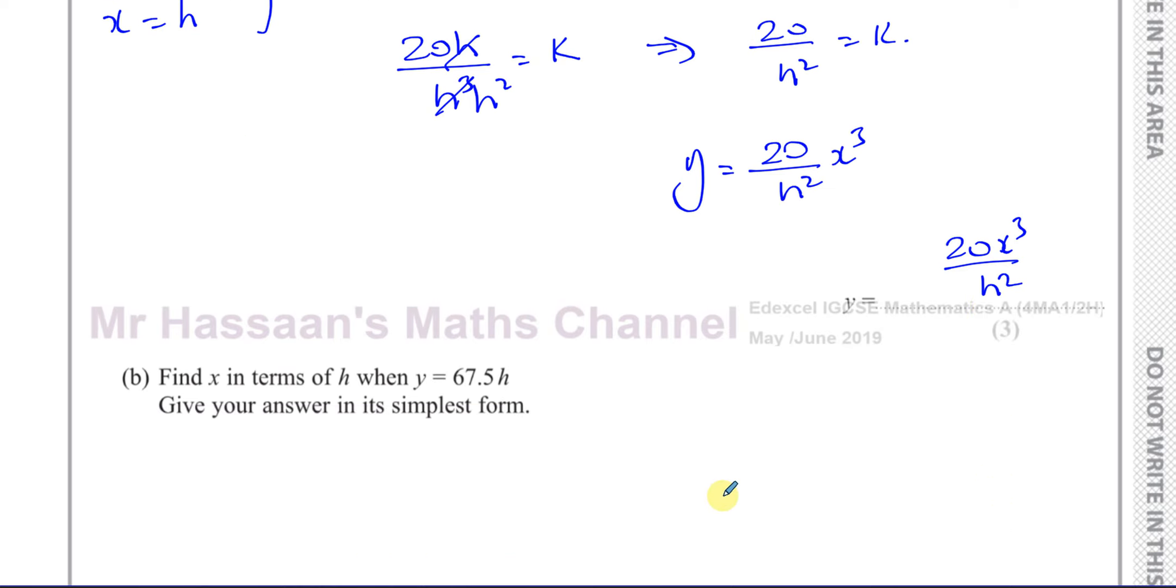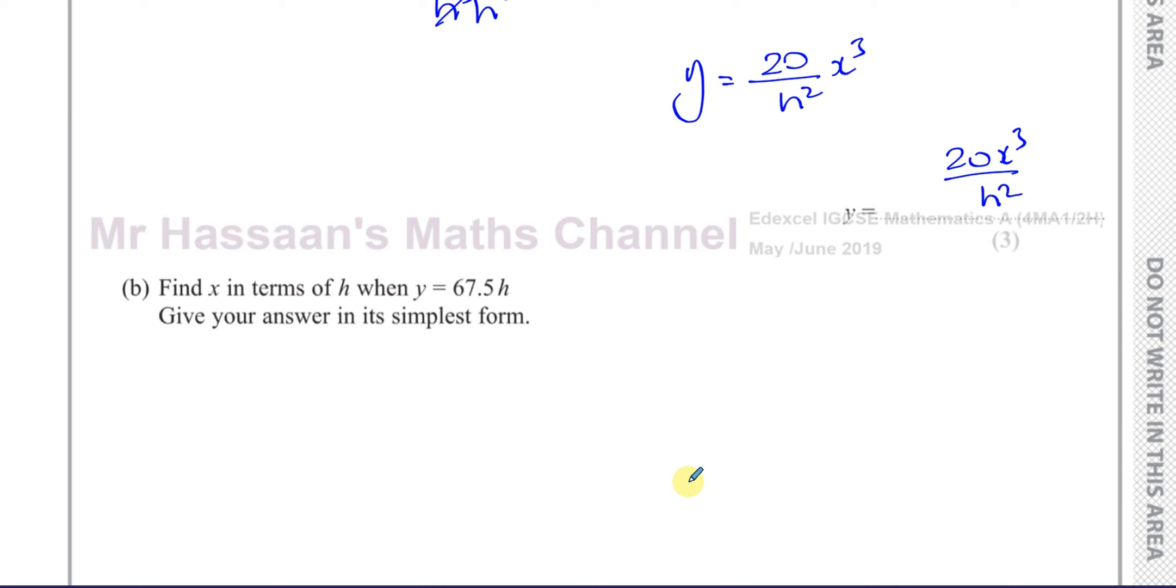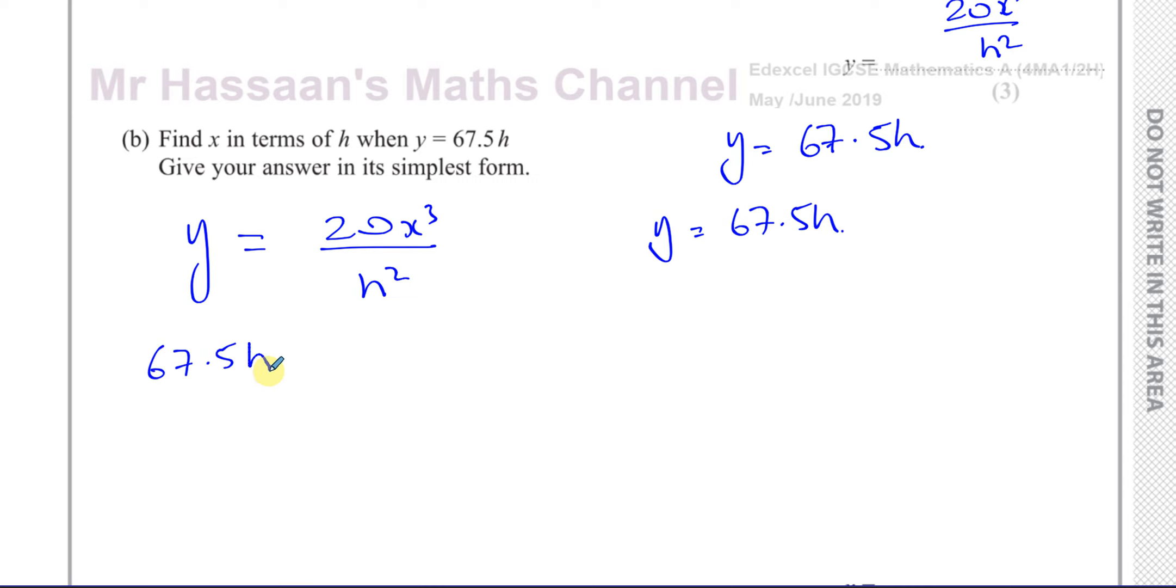Part b says find x in terms of h when y is equal to 67.5h. Now we have the formula that connects them together, which is y equals 20x cubed over h squared. They've told us to find x when y is equal to 67.5h. So I'm going to replace the y with 67.5h, and I'm going to solve this now for the x.